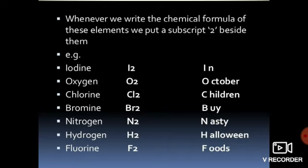Remember the phrase: 'In October Children Buy Nasty Halloween Foods.' Each initial stands for a diatomic element — I for iodine, O for oxygen, C for chlorine, B for bromine, N for nitrogen, H for hydrogen, and F for fluorine. These are the elements existing in molecular form as I2, O2, Cl2, Br2, N2, H2, and F2.